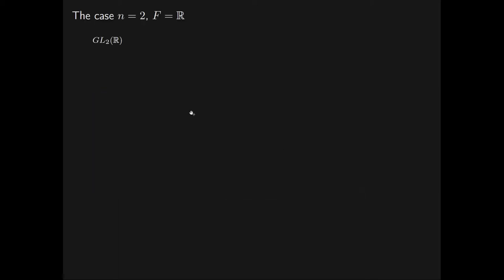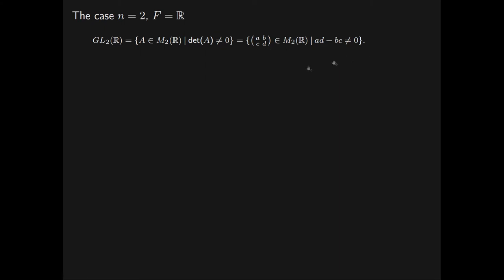So let's jump in. The general linear group of dimension 2 over the real numbers is defined as the set of 2 by 2 real matrices A such that the determinant of A is non-zero. This is equivalent to the set of 2 by 2 real matrices with entries A, B, C and D such that AD minus BC is non-zero. If a 2 by 2 real matrix belongs to GL2R, we say the matrix is invertible.